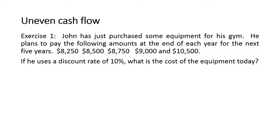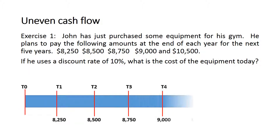In order not to get confused with the number of time periods for each payment, let's put them in a timeline. The first payment is 8,250 — taking it back to present time is one period of time. For the second payment, 8,500, taking it to the present time is two periods of time. For 8,750, we're taking it back three periods of time, and so on for the rest of the payments.